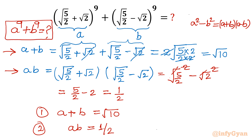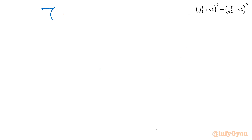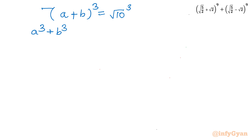We will cube equation 1 first. Starting with a + b = √10, taking cubes of both sides, the left side expands using the identity (a + b)³ = a³ + b³ + 3ab(a + b). The right side becomes √10 × √10 × √10 = 10√10.